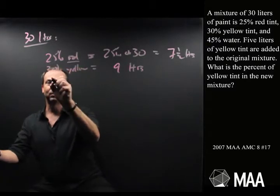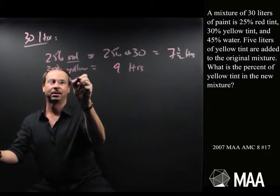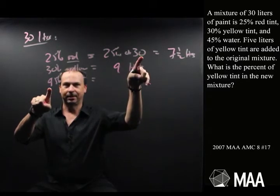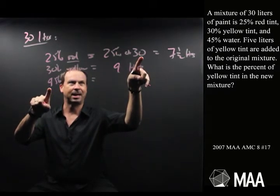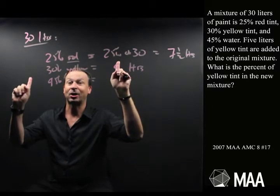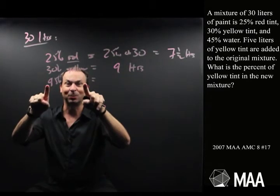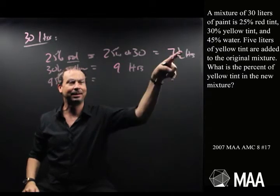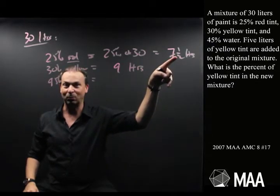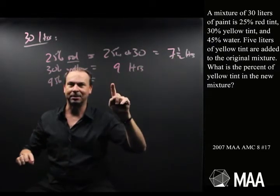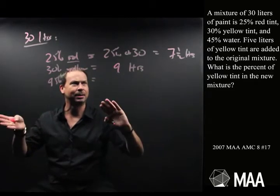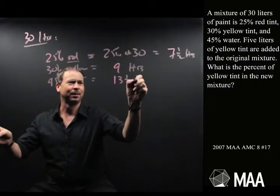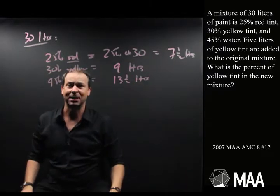Lastly, 45% is water. Rather than calculate 45% of 30 litres directly, what I've got so far is 7 and a half and 9 litres, which makes 16 and a half litres. The rest is water — so 30 take away 16 and a half. That's 13 and a half litres of water.